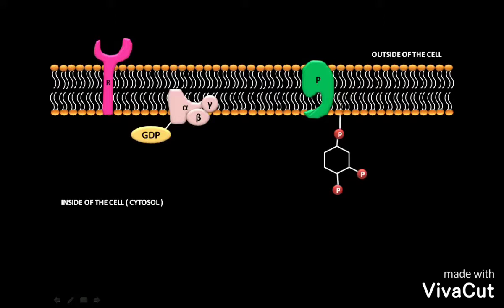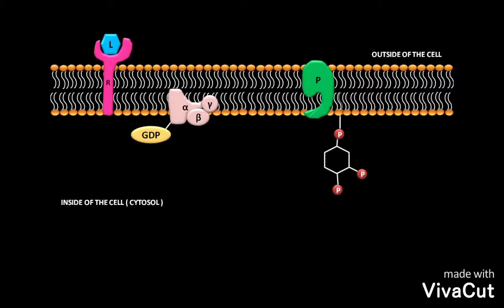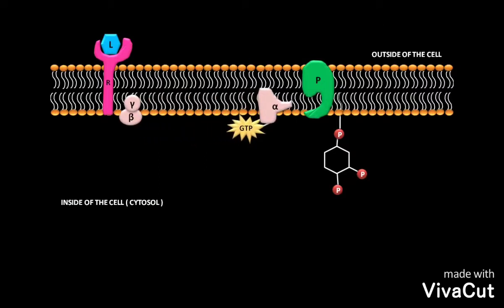First of all, the ligand molecule binds to the ligand binding site in the receptor present in the cell's plasma membrane. As a result, the inactive G-protein called GP releases its bound GDP and binds to GTP. As a result, the G-protein becomes active.